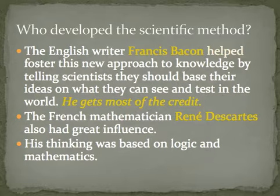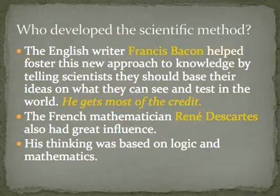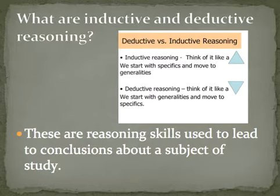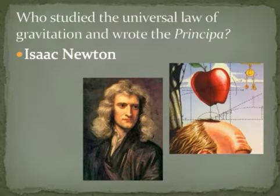The English writer Francis Bacon is usually given credit for developing the scientific method, with René Descartes also being hugely important. The scientific method involves coming up with a hypothesis, testing it, collecting data, and then drawing a conclusion. Bacon used inductive reasoning — reasoning from specific facts to a general statement — while Descartes used deductive reasoning, which is the opposite: starting from a general statement and picking out specific truths.